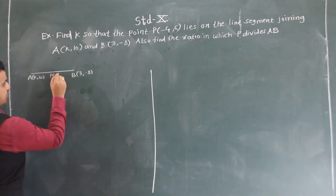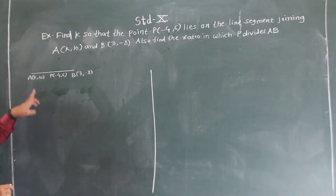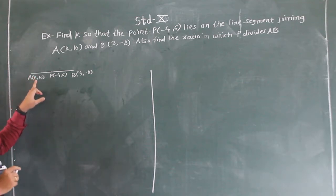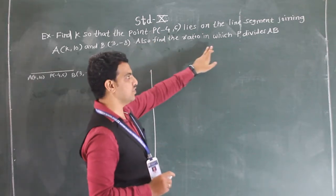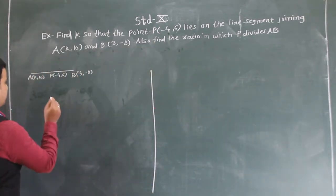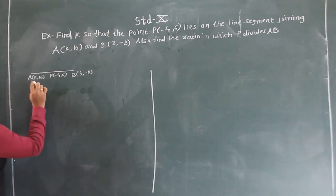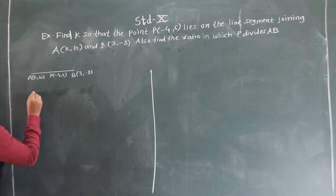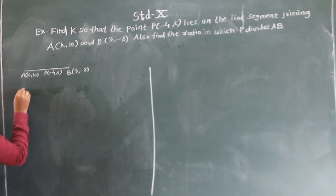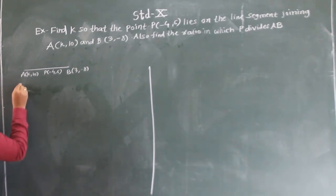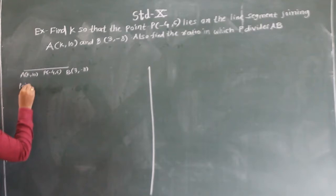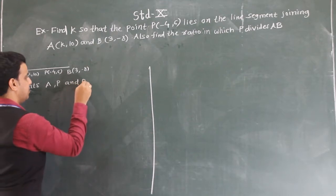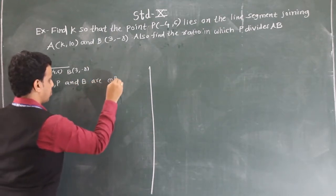Coordinates of point P are given as (-4, 6). We have to find the value of K, and also find the ratio in which P divides AB. Since all three points lie on the line segment, A, P and B are collinear points.